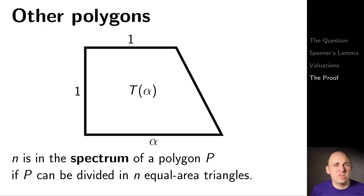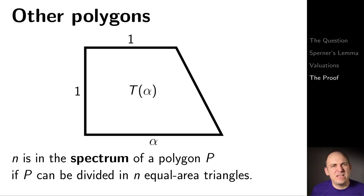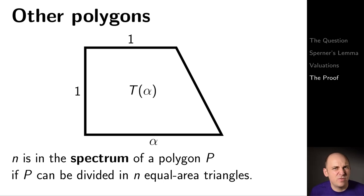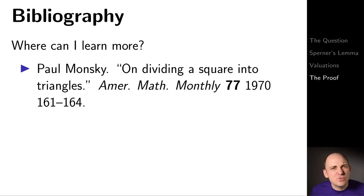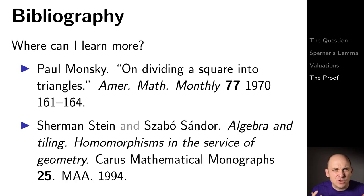There are many interesting generalizations. For other polygons, you can define the spectrum of a polygon as the set of numbers N for which the polygon can be divided into N equal area triangles. The right-angle trapezoid shown here is a case that has been considered for various choices of alpha. The original article by Monsky is extremely readable, and there's also a wonderful book by Stein and Sander, 'Algebra and Tiling: Homomorphisms in the Service of Geometry,' which is highly recommended.